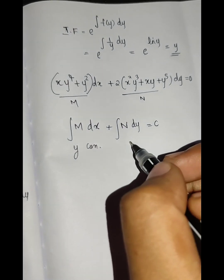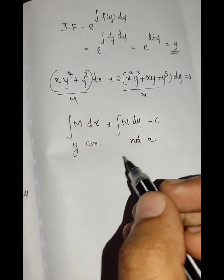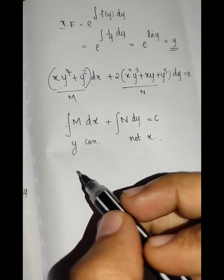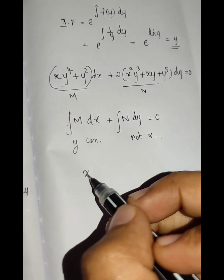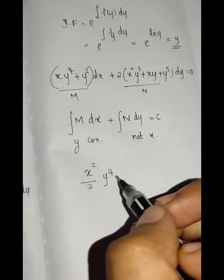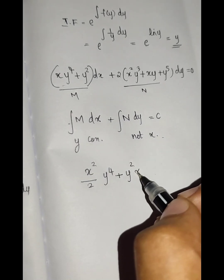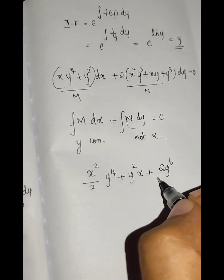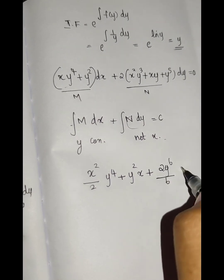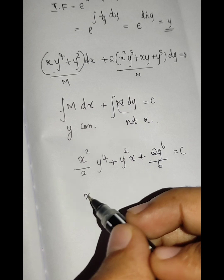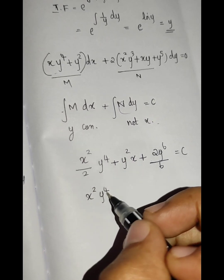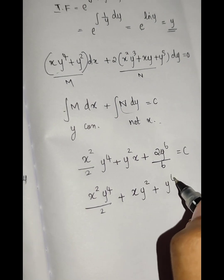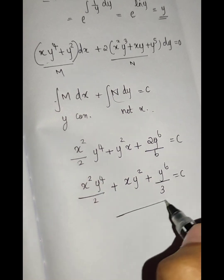The terms not containing x are integrated separately. Integrating M with y constant gives x²y⁴/2. We also get xy² plus y⁶/3. So the solution is x²y⁴/2 + xy² + y⁶/3 equals c.